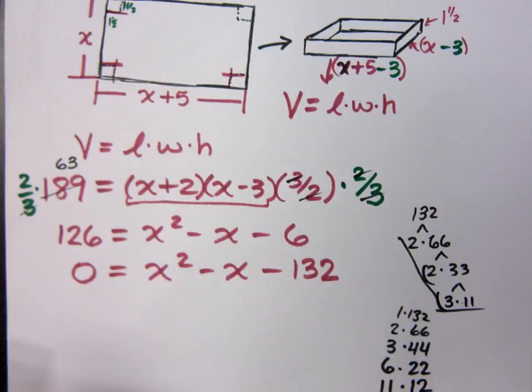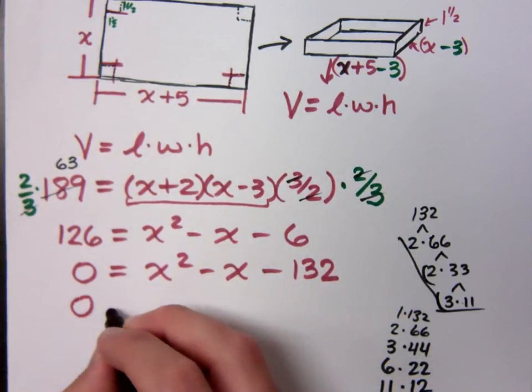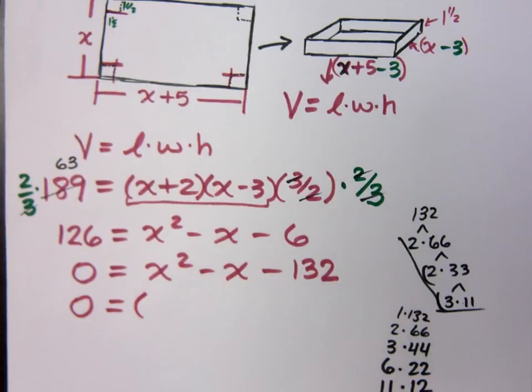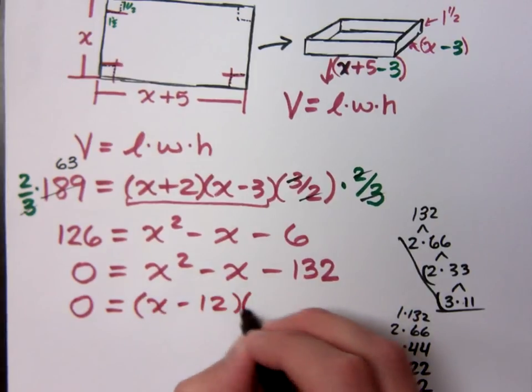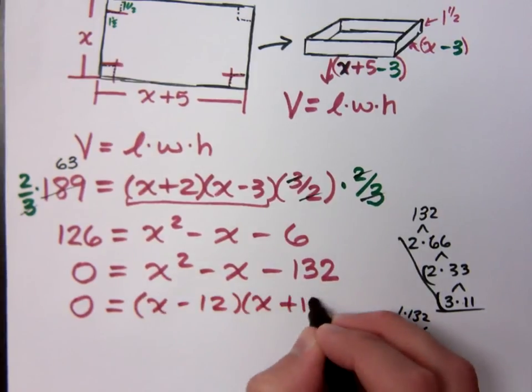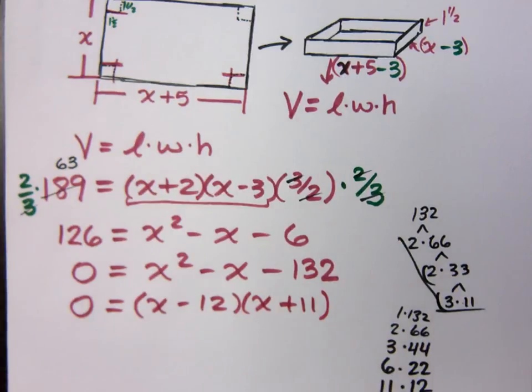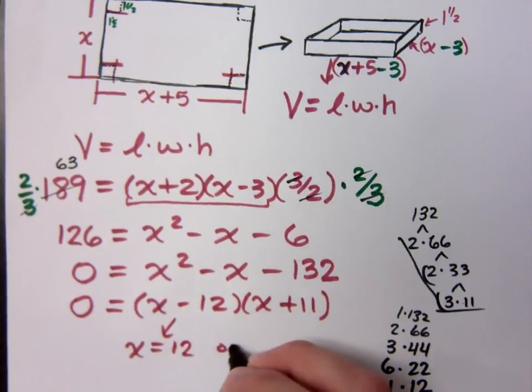Now, you may have stopped earlier and said, oh, 12 times 11, that's exactly what I need. But if you don't see that, I want you to know how you can get everything out of this. So 11 and 12, that's exactly what I want to use. So how does this factor? That's X minus 12 times X plus 11. So when I finish solving this I get X equals 12 or X equals negative 11.